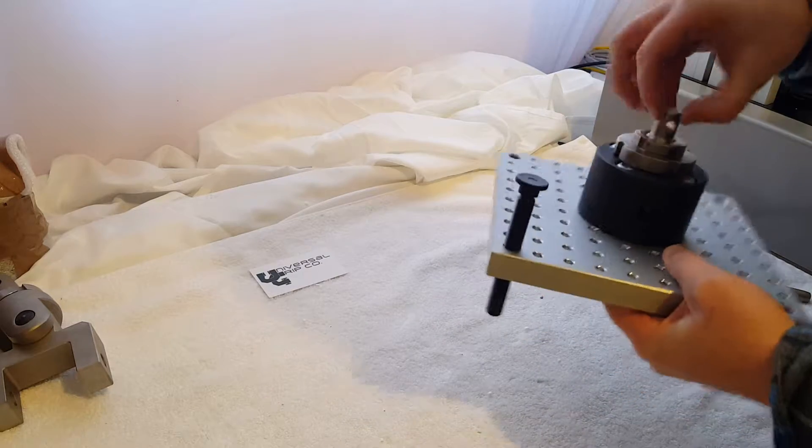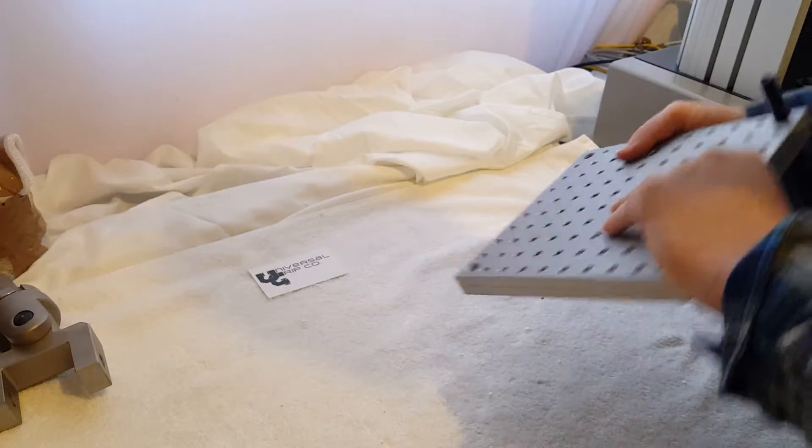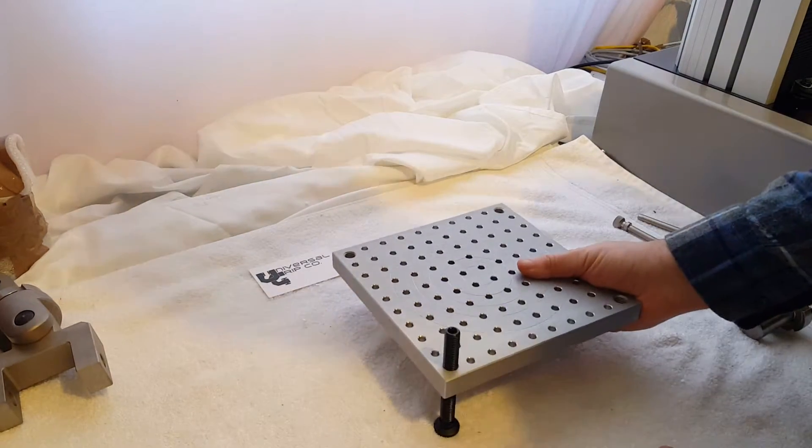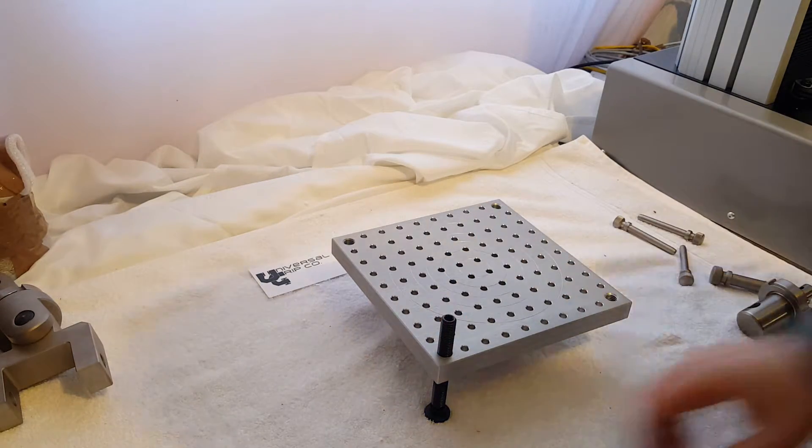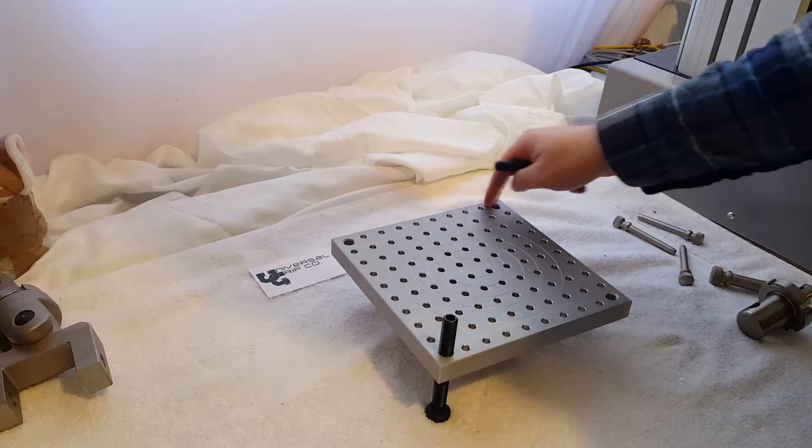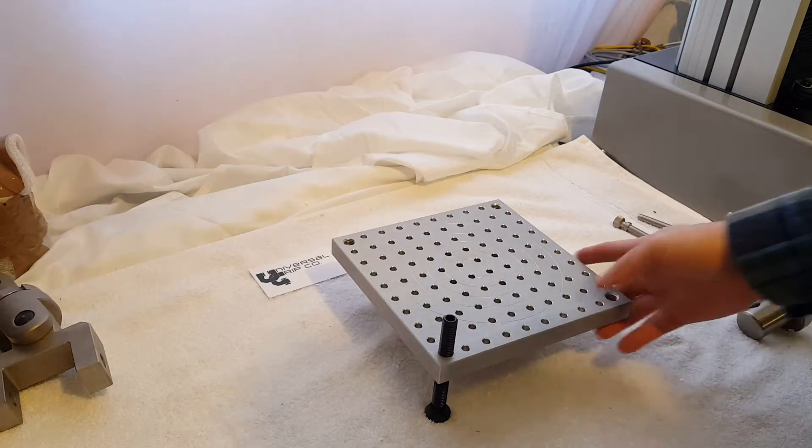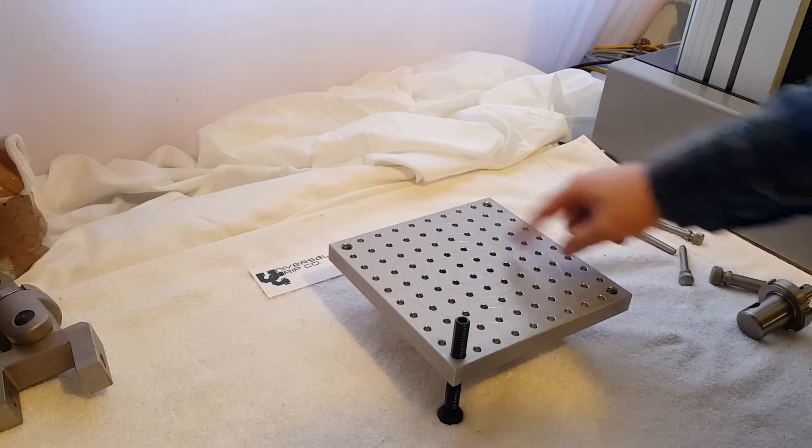What's nice about this compression plate is that it also comes with these screws to reinforce it on the table. There are four sets of screws which go on each corner. This plate is about 8 by 8 inches.